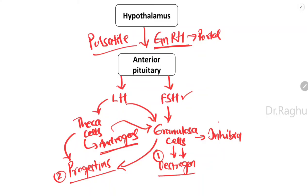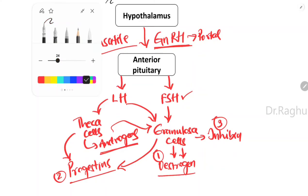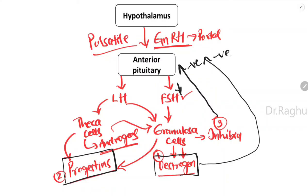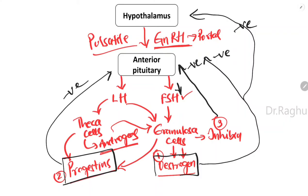We now have three important hormones: estrogen, progesterone, and inhibin. Inhibin exerts negative feedback inhibition on the anterior pituitary, reducing FSH secretion. Both estrogen and progesterone also exert negative feedback inhibition at the level of the anterior pituitary as well as the hypothalamus, decreasing the secretion of both FSH and LH.